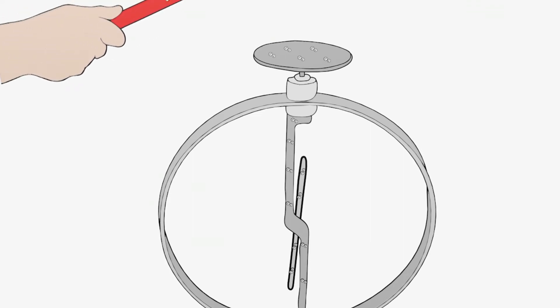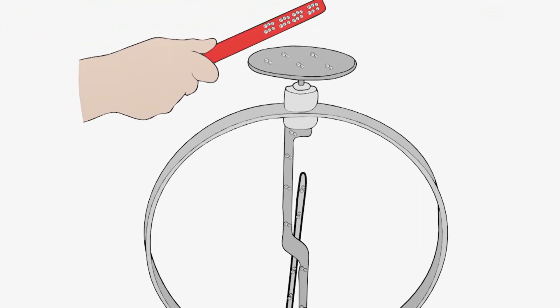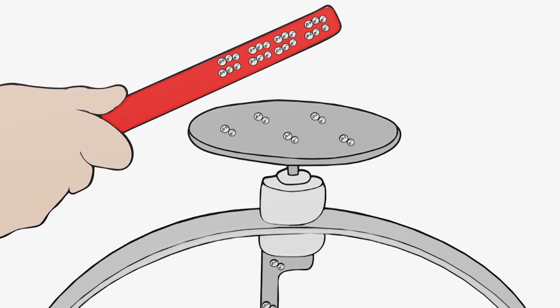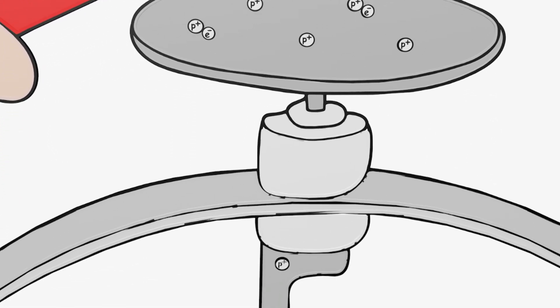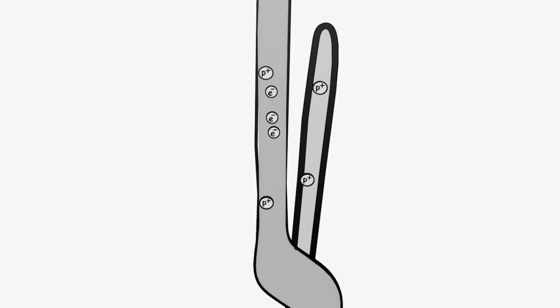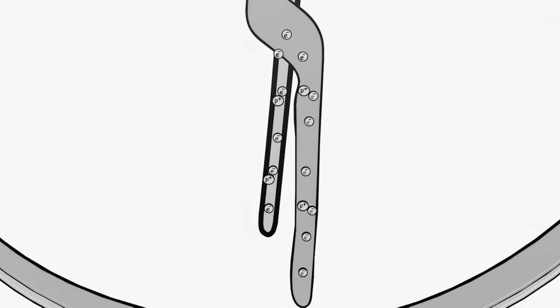If you approach a negatively charged PVC rod to the electroscope, some negative charges are repelled downwards. As a result, there are more negative charges than positive charges in the lower part of the metal rod and the needle.